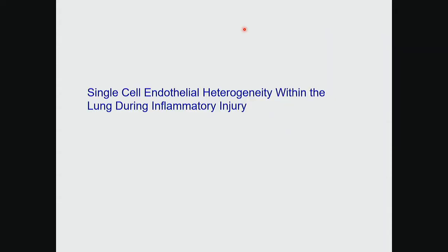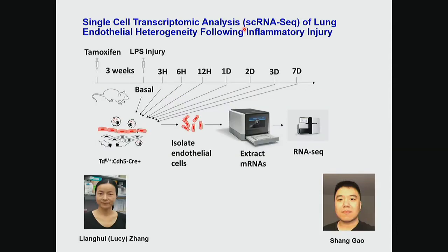This is the biological context that prompted a lot of our research. We asked: do all blood vessel endothelial cells in the lung have that response, or are there subpopulations? Which is why we looked into single-cell RNA sequencing. This project was led by Lucy Zhang, who is now an assistant professor at University of Pittsburgh, and Shang Gao, who is actually one of the workshop leaders today — a PhD student about to graduate.